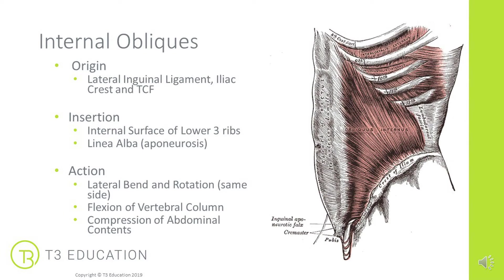Looking at the internal obliques, these originate at the lateral inguinal ligament and the iliac crest and all the way around to the thoracolumbar fascia — so they originate on the pelvis. They then move upwards, inserting into the surface of the lower three ribs and also the linea alba, that aponeurosis in the central midline.